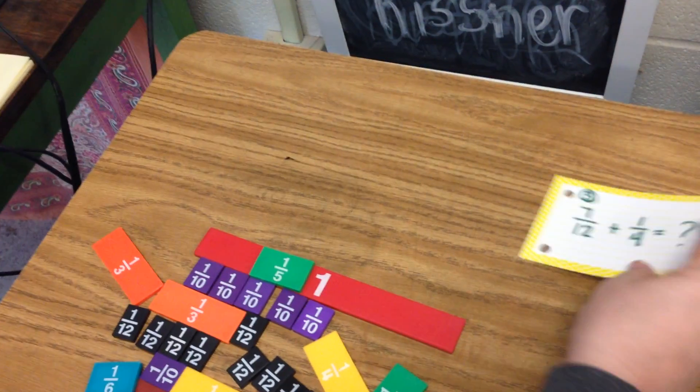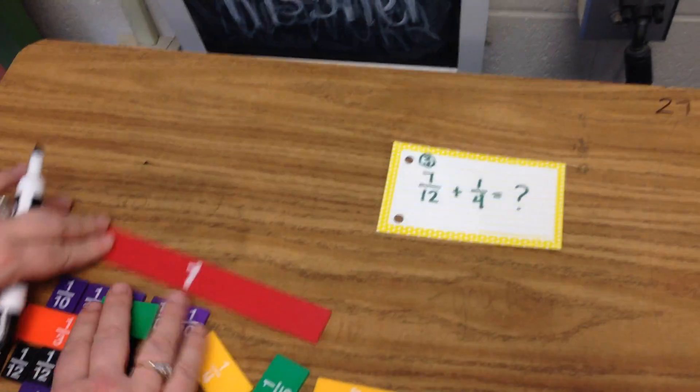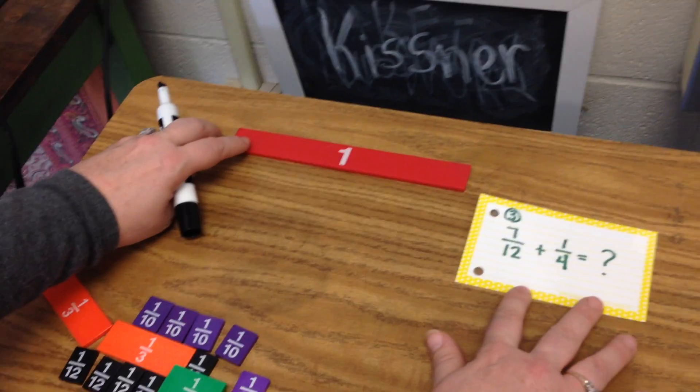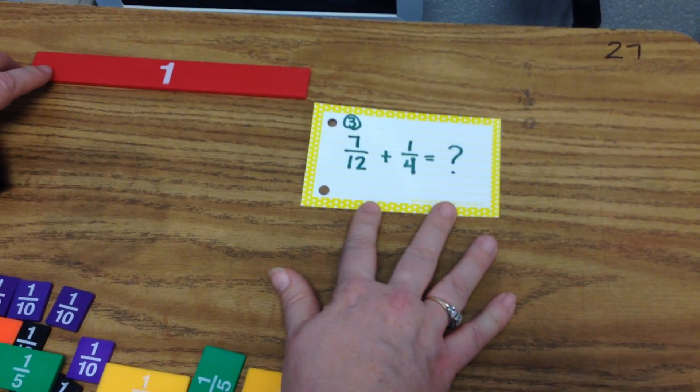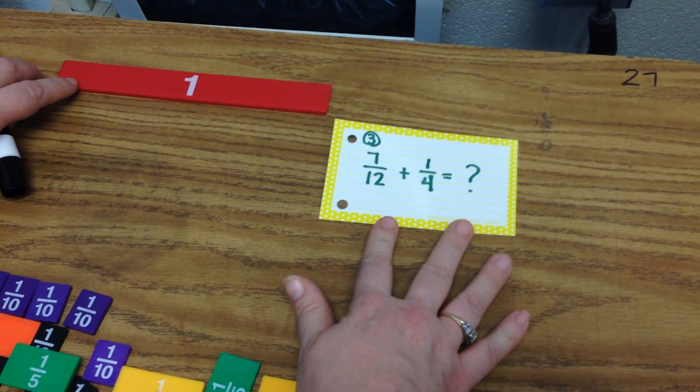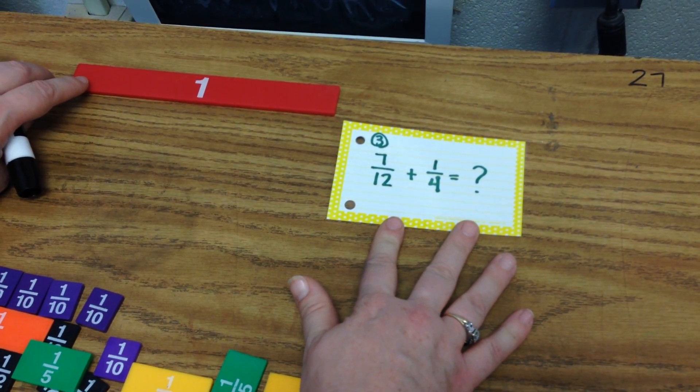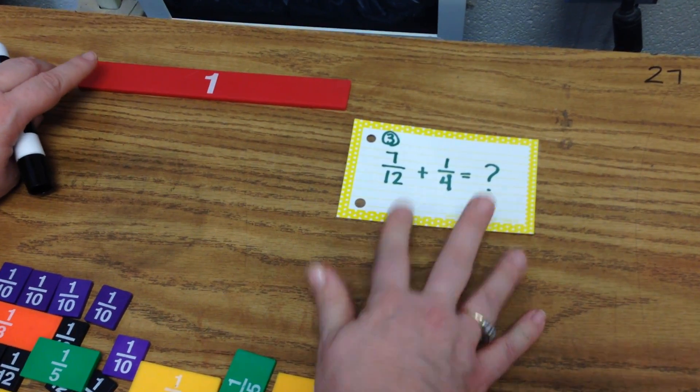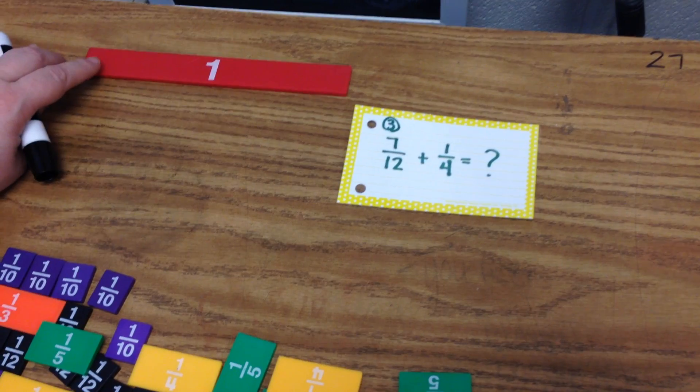I'll give you one more to try. I'll give you a chance to try to model this one on your own. You can pause the video. Try seven-twelfths plus one-fourth. You can pause now and then when you have your answer, turn it back on and you can see if you've got the correct answer.